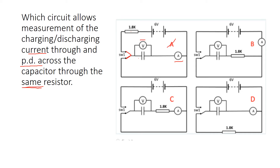Let's look at circuit B — discharging first, so the line is in the right place. We can see that we are discharging through that resistor. However, we can't measure the current because the ammeter is not in this part of the circuit, so it's not going to give us any current data. So it's not circuit B either.